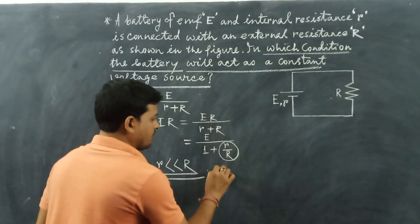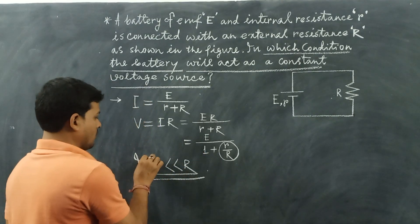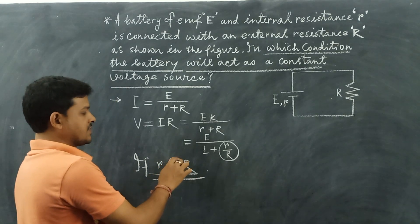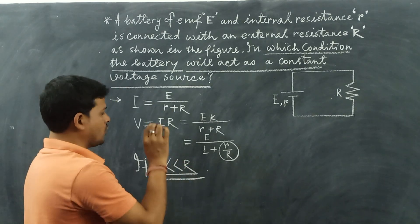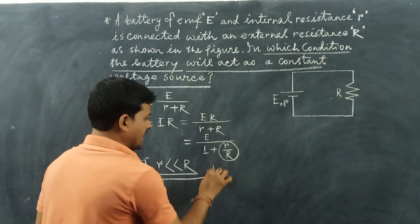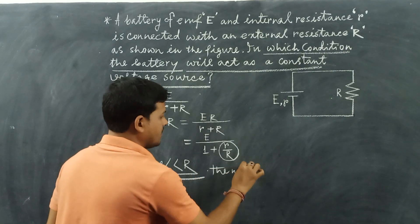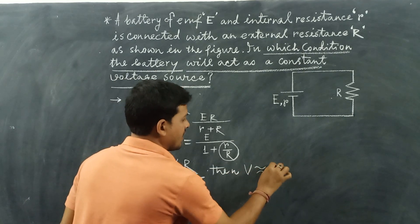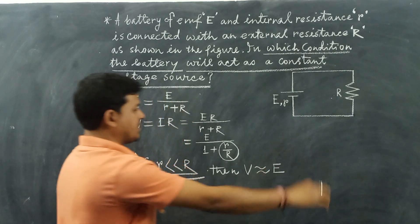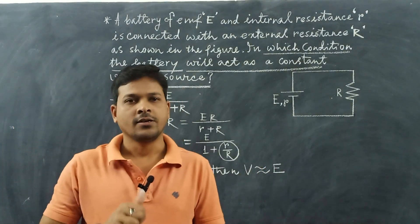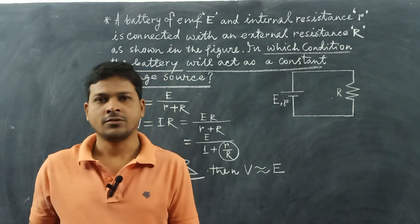Then the value of V, if the internal resistance r is much less than R, very small negligible value, then V will be approximately equal to E. So this is the solution.